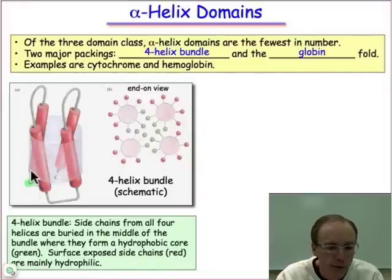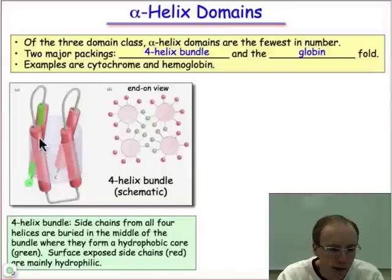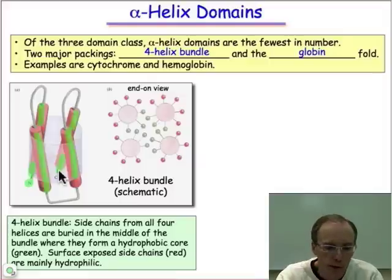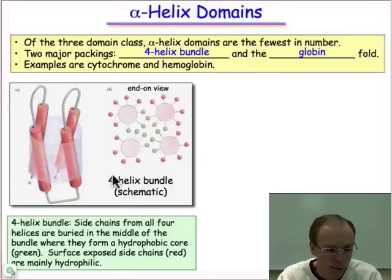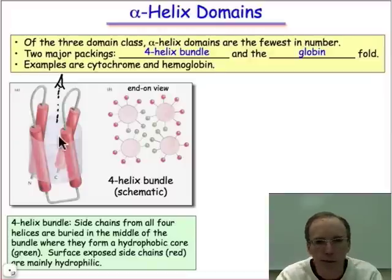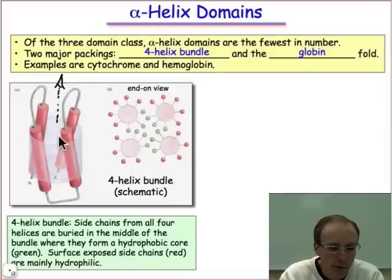Starting at the N-terminus and representing the α-helices as red cylinders, as we travel around we can see that these red cylinders pack together side by side in an almost parallel fashion. Now if we take a look at this from the top view down, what we find is that these α-helix segments pack together in a way that creates an amphiphilic structure.